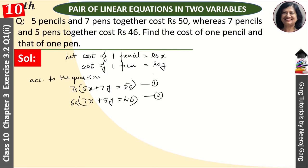Multiplying the first equation by 7: 7 into 5 is 35x plus 7 into 7 is 49y equals 7 into 50, which is 350. Multiplying the second equation by 5: 5 into 7 is 35x plus 5 into 5 is 25y equals 5 into 46, which is 230. Now we will subtract these equations.